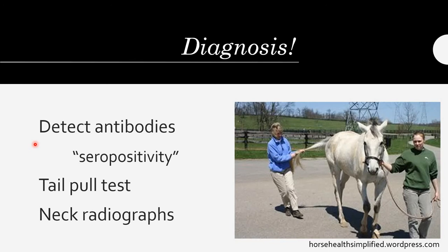So how are we going to diagnose this? You might suspect it if the horse is losing a lot of topline muscle or having trouble picking up a canter one way or the other. Your vet will come out and probably do some initial assessments, such as doing a tail pull test like you can see here. She's essentially tugging on the tail as the horse tries to walk forward, and if the horse stumbles or has a really hard time balancing, you might suspect EPM or another neurological disease. If they fail the tail pull test, you might try to detect antibodies either within the blood or the cerebrospinal fluid surrounding the brain and spinal cord, which will be sent off to a lab.